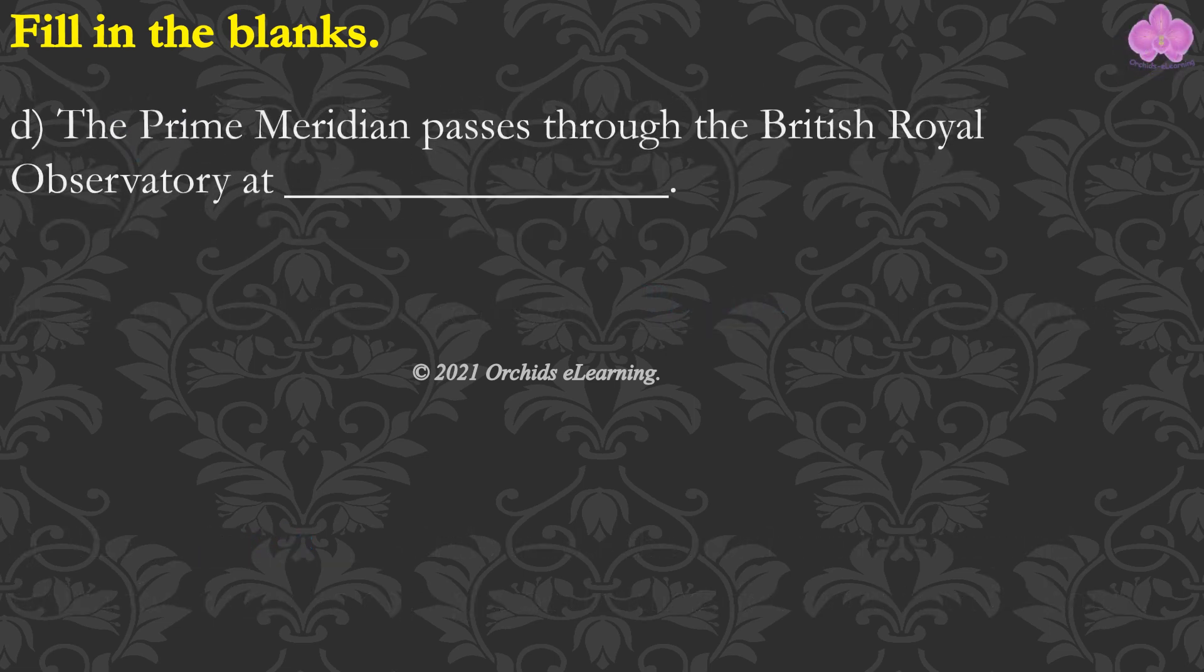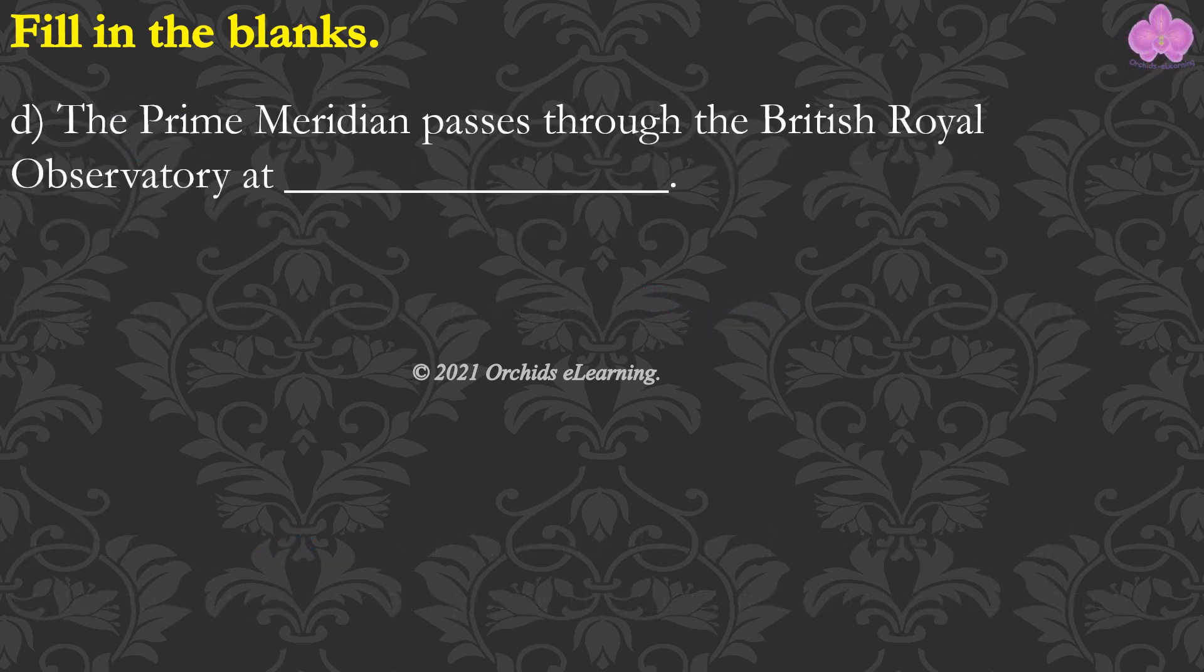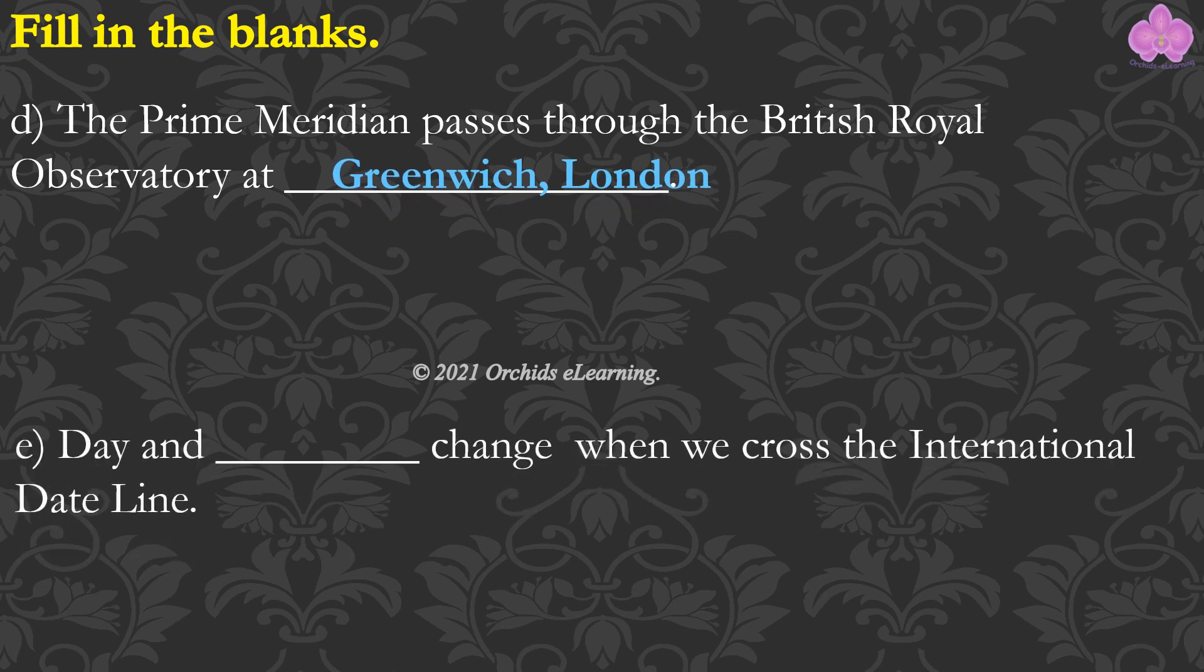The Prime Meridian passes through the British Royal Observatory at Greenwich, London. Day and date change when we cross the international date line.